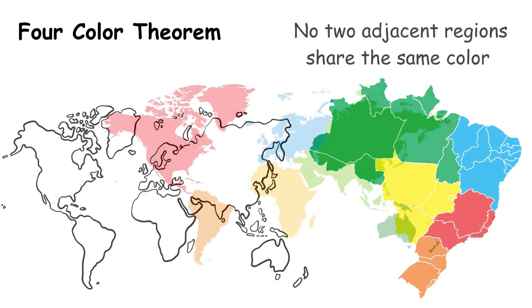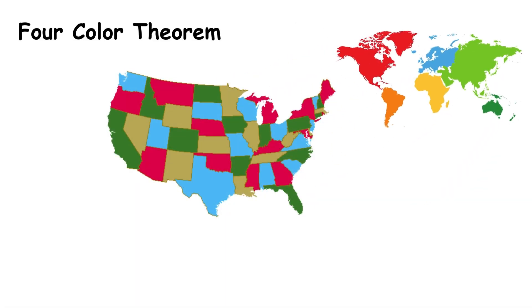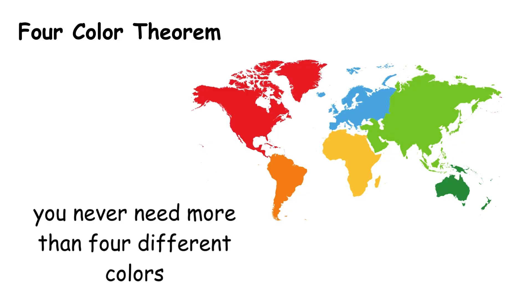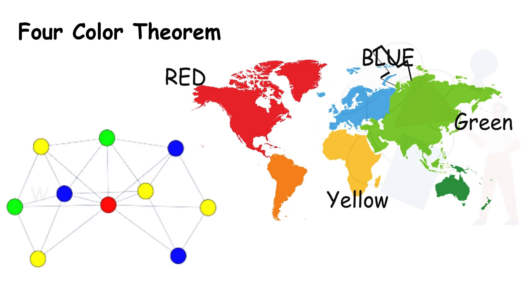In simple terms, whether you're coloring a map of countries, states, or any other regions, you never need more than four different colors to ensure neighboring areas are always different colors. Try this with any map. You'll find that red, blue, green, and yellow are always sufficient.